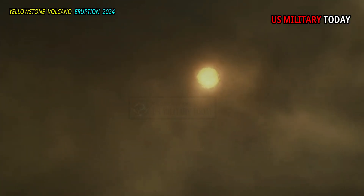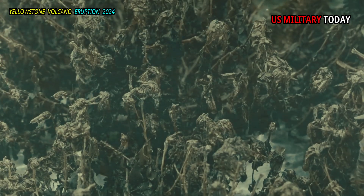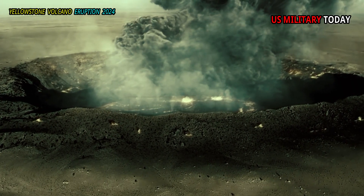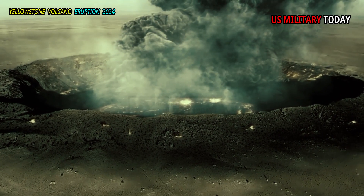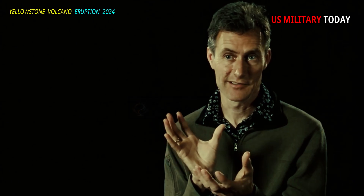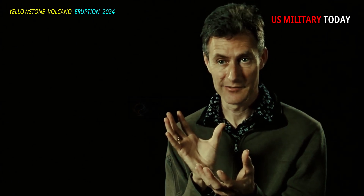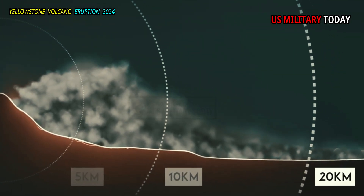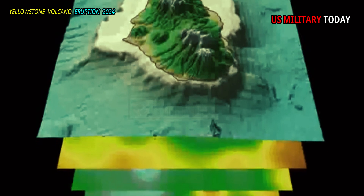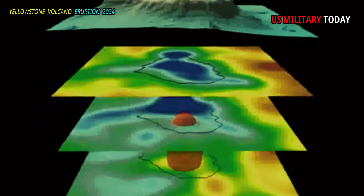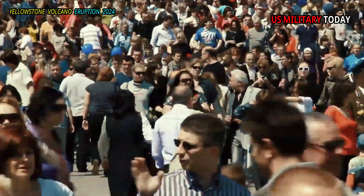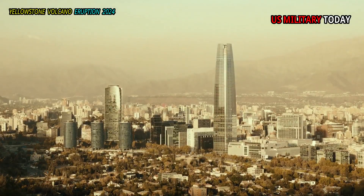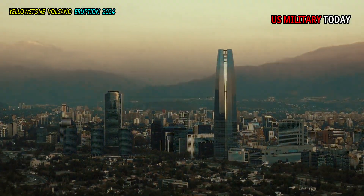One interesting and challenging aspect of cosmogenic dating is that the number of cosmic rays that hit Earth's surface depends on a number of factors. For example, a large number of cosmic rays are deflected away from Earth by its magnetic field, so your location on Earth is a big factor in how many cosmic rays reach the surface.